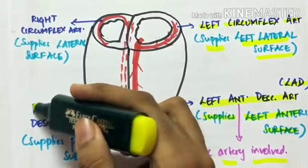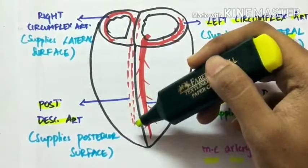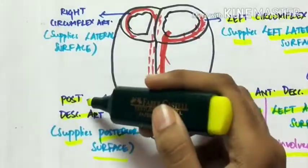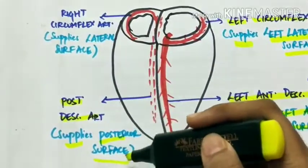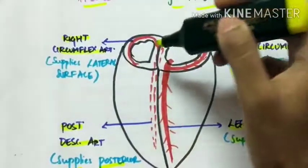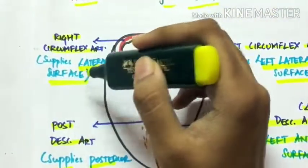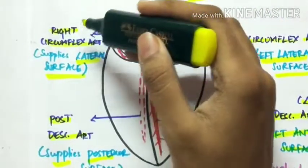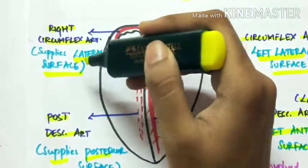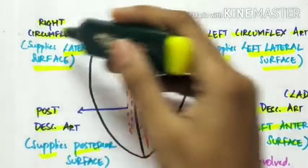The posterior descending artery supplies the posterior surface of the heart, so occlusion leads to posterior surface involvement. The right circumflex artery supplies the lateral surface of the heart, so its occlusion causes lateral surface infarction. These are the four main arteries involved in myocardial infarction.